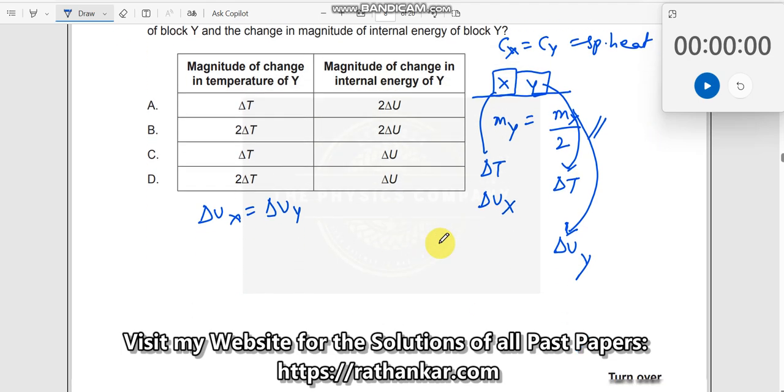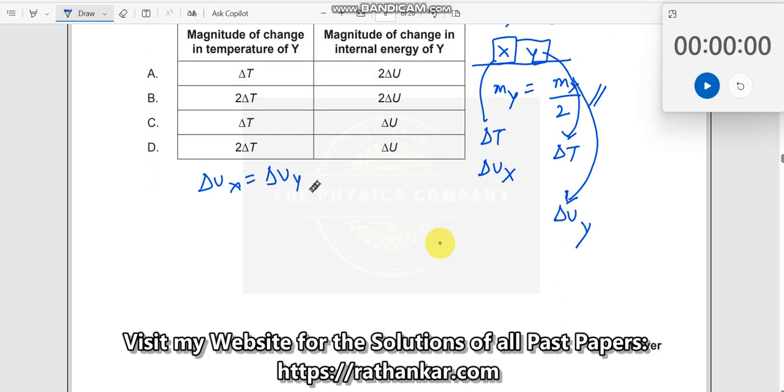The reason is because the change in internal energy remains the same when both objects attain thermal equilibrium. Now, this is what we have come to note, so we will use this. You see these two options are incorrect, so either of these two should be correct.